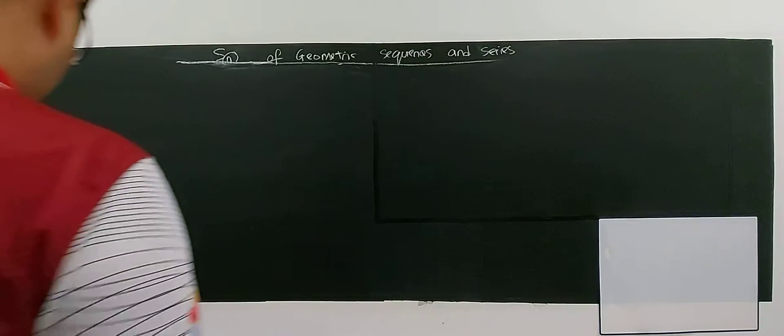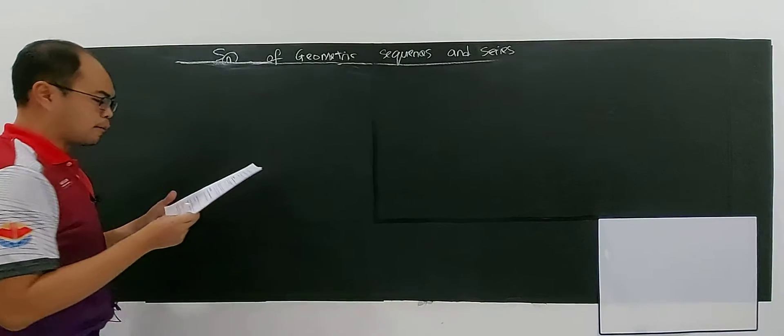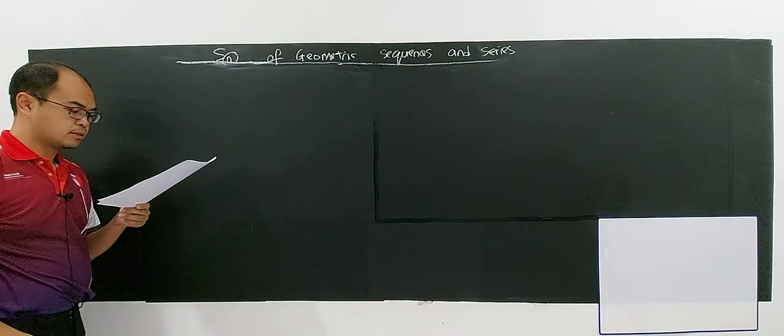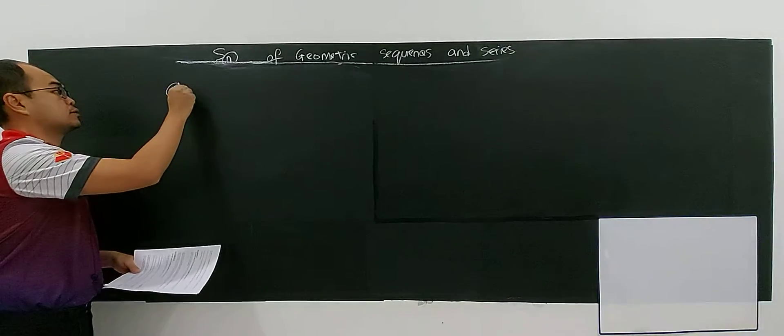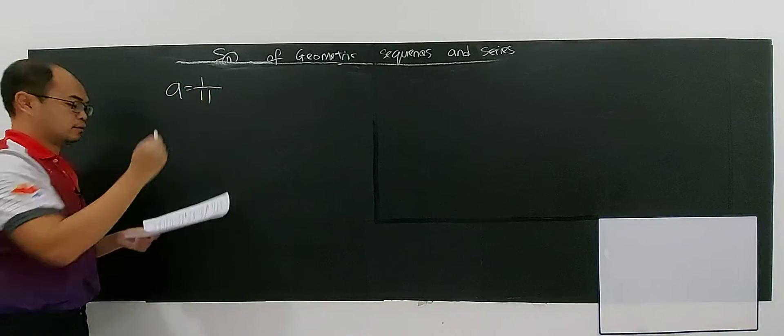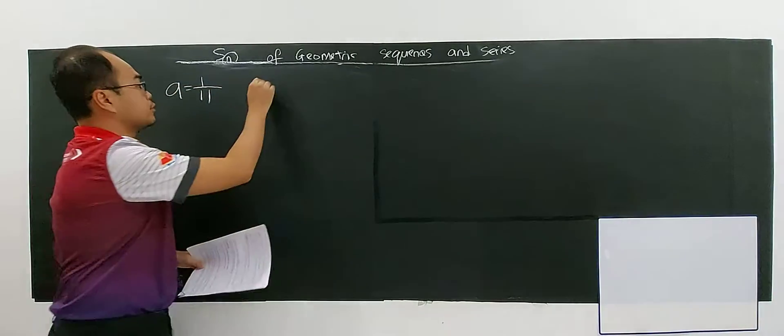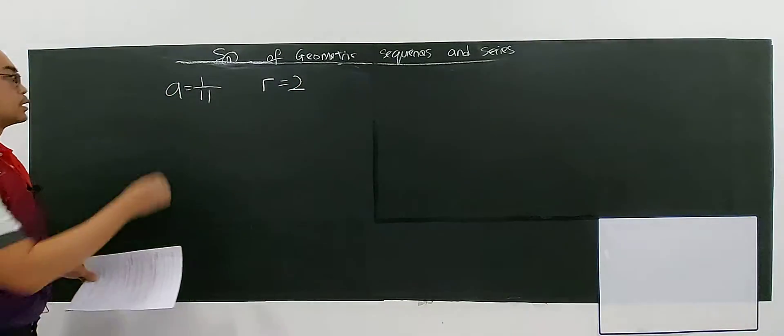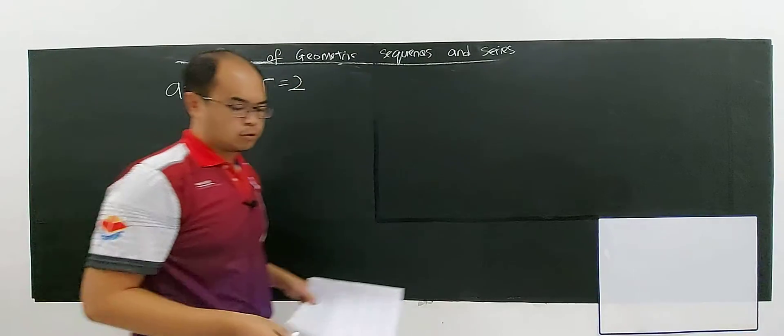Okay, let's discuss this question. This question says that a geometric sequence has the first term of 1 over 11, and common ratio is represented by r equals 2. So this is a geometric sequence.